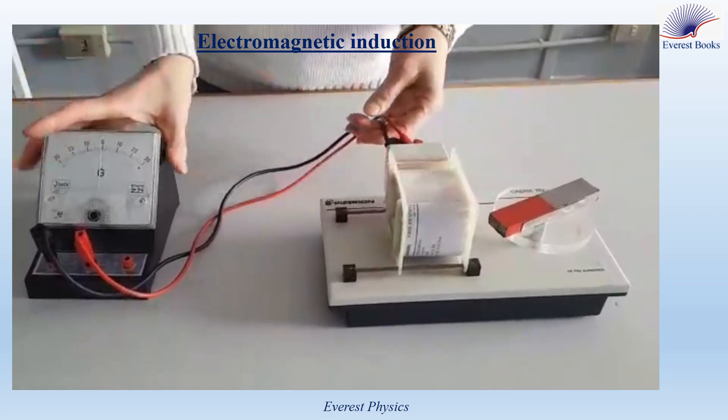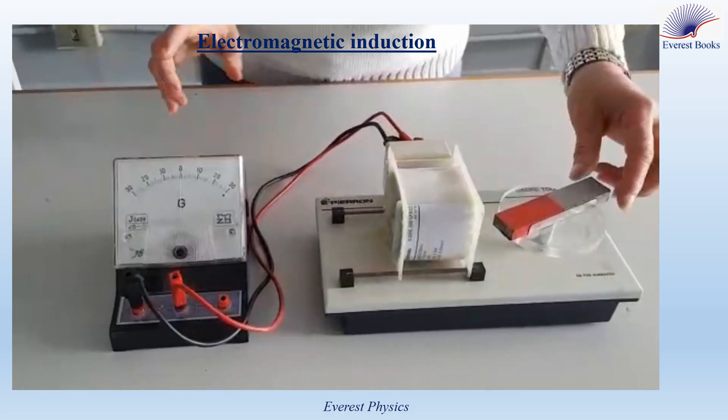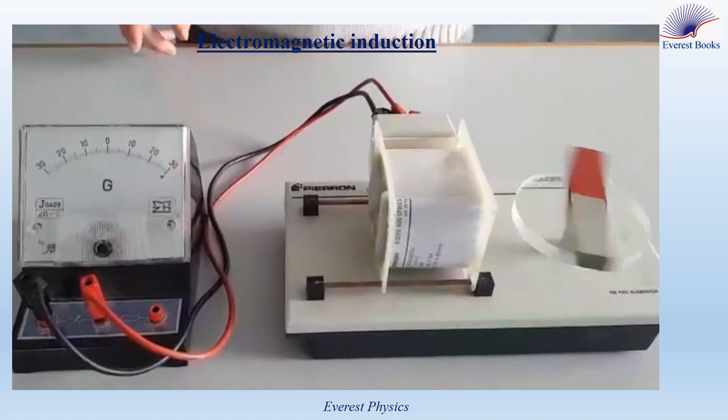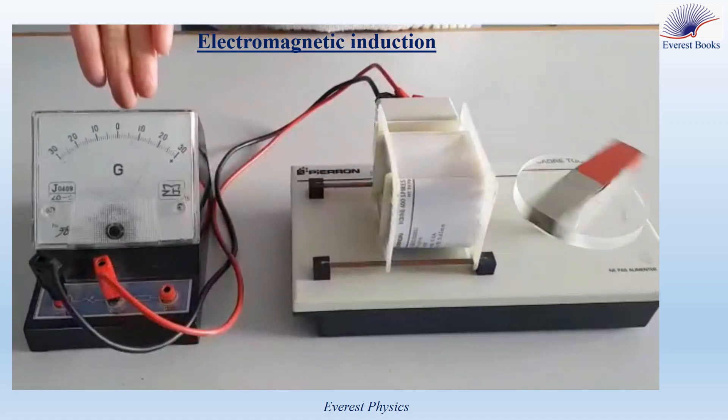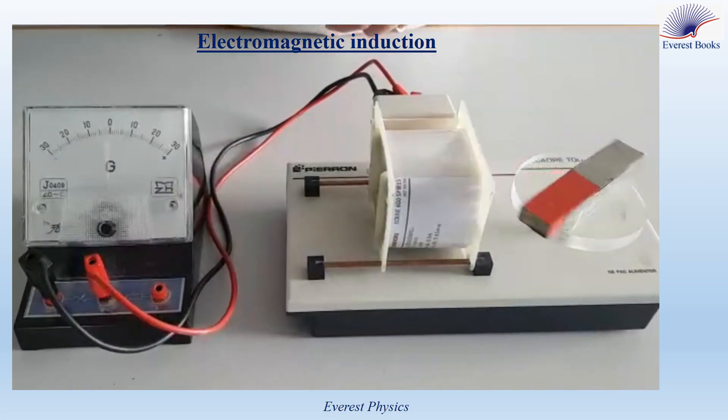So here we have a copper coil. We connect the galvanometer across the copper coil, and now I will rotate the magnet. Observe. As you see, during the rotation of the magnet, the needle is deflected into opposite directions.